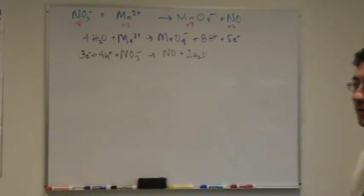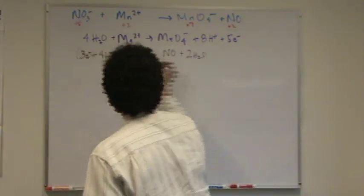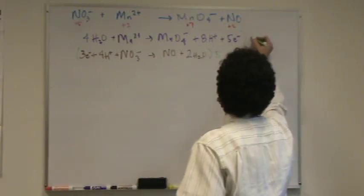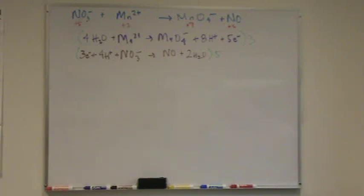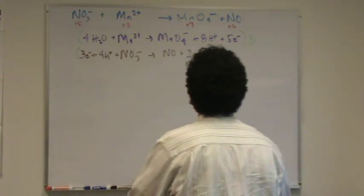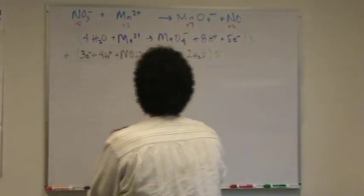Okay, now is where we find our least common multiple, which is fifteen. I got a three here, so I'll multiply it by five. And I've got a five up here, I'll multiply it by three. So I'll have fifteen electrons on both sides. And the electrons will be gone. We need electrons to cancel. And the rest is just kind of adding it up.